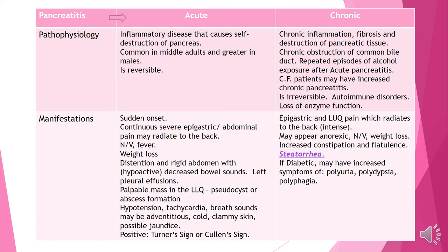Looking at acute pancreatitis first: the pathophysiology is an inflammatory disease that will cause self-destruction of the pancreas. It is common in middle-aged adults, greater in males, and it is reversible. You can have acute pancreatitis, we can treat it, and then you can never have effects of it again.